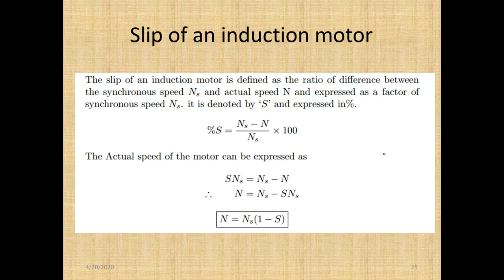After it experiences a force, the rotor part rotates with speed N, this is what we call the actual speed. The difference is the slip. The slip of an induction motor is defined as the ratio of difference between the synchronous speed Ns and actual speed N to the synchronous speed Ns, expressed as a percentage. %S = (Ns - N) / Ns × 100.